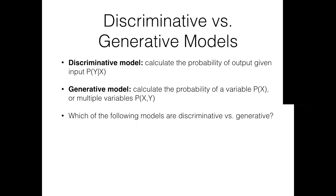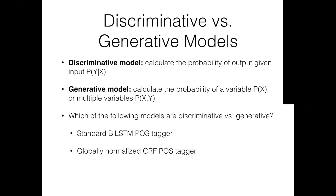Another typical generative model in NLP is an LSTM language model. Here is a small quiz: which of the following models are discriminative or generative? The standard biLSTM POS tagger is discriminative because it predicts the POS tags given the input sentence. The globally normalized CRF POS tagger is also discriminative because it models a conditional distribution of POS tags given the input sentence. And the language model, as just mentioned, is a generative model.